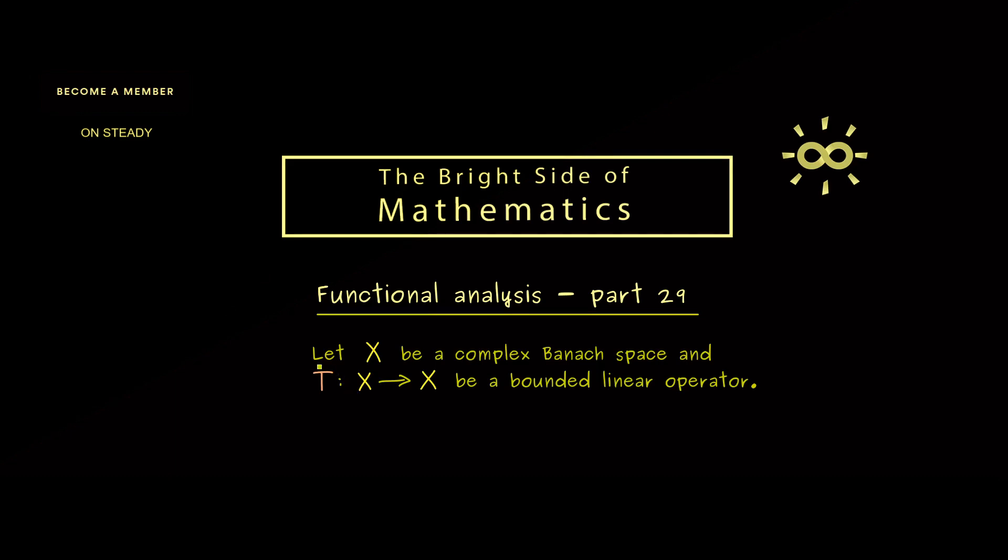The overall assumption here is that we have a complex Banach space X and a bounded linear operator T. For this we defined the set sigma T, the so-called spectrum of T. Now you already know, lambda is an element of sigma T if and only if T minus lambda identity is not invertible as a bounded operator.